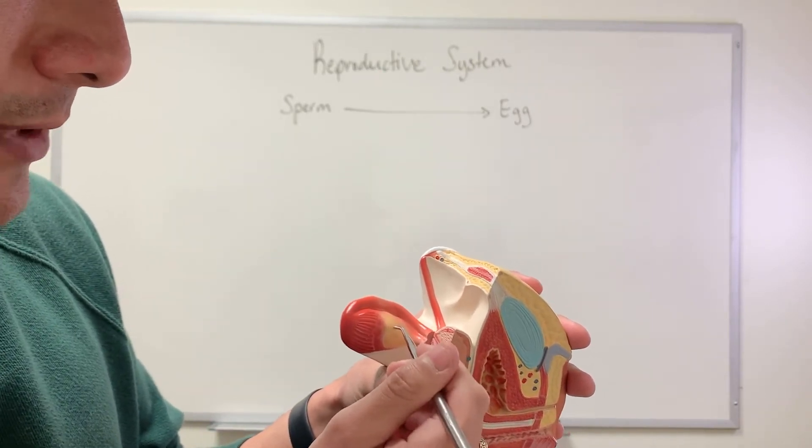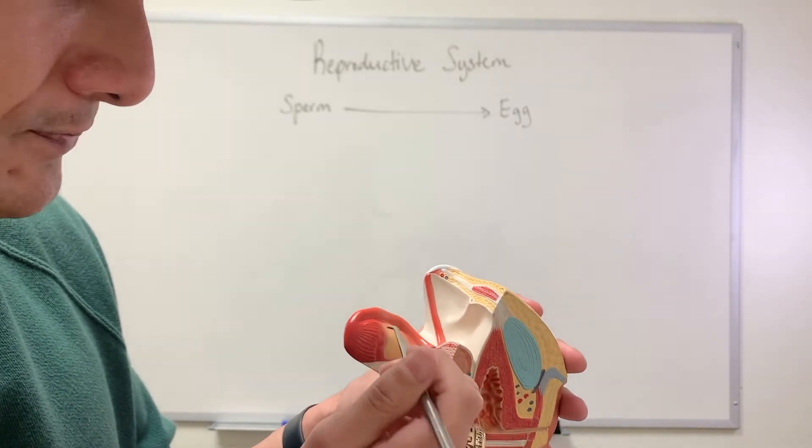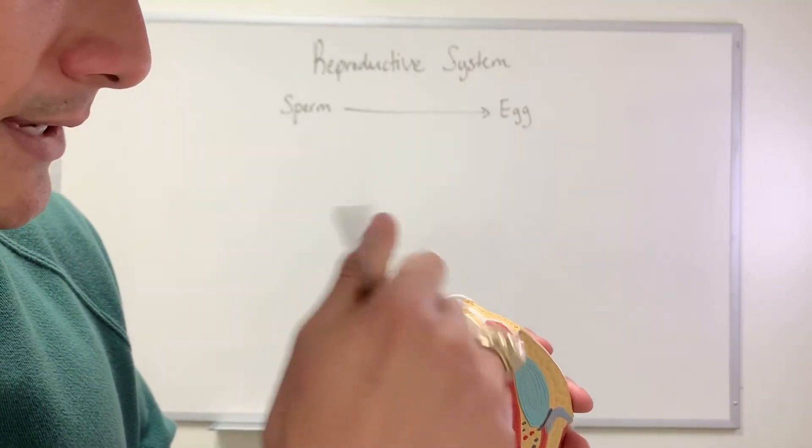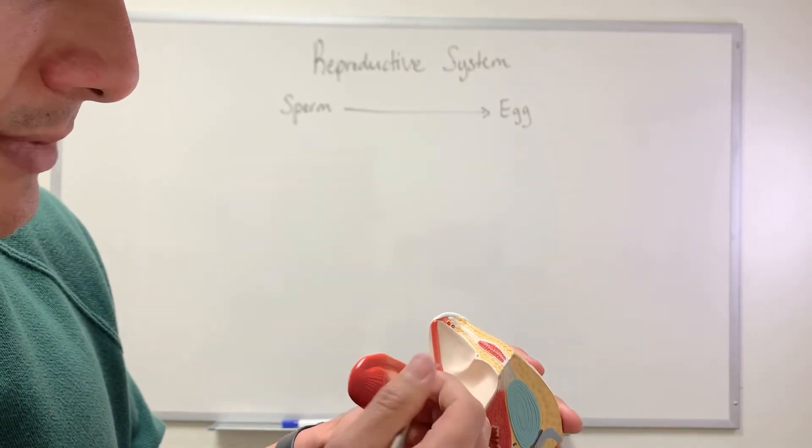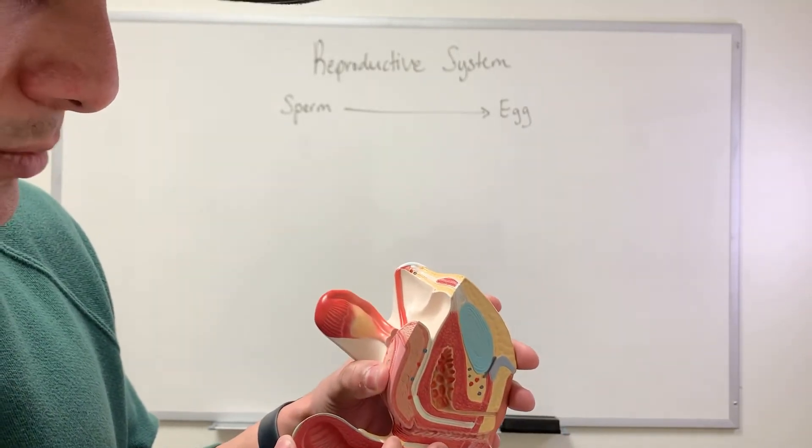And so in order for the egg to reach the fallopian tube at this region over here, which is known as the ampulla, we have what's known as the fimbriae. So the fimbriae will bring the egg towards this way through the fallopian tube, and then it'll just hang out in this area. So how does sperm get to this point?